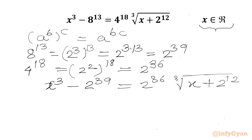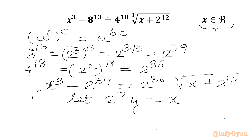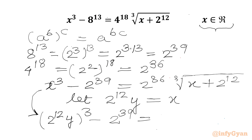Now we will use substitution. Let us consider x = 2^12 × y. So I can write the equation as (2^12 · y)³ − 2^39 = 2^36 × ∛(2^12 · y + 2^12).